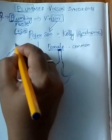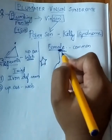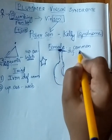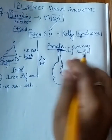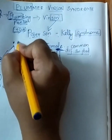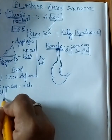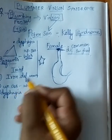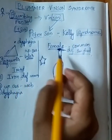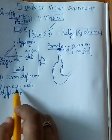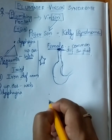The third symptom: since there is a web in the upper esophageal portion, there would be slight difficulty in swallowing food. The medical terminology for difficulty in swallowing food is dysphagia, so dysphagia is the third point. The classic triad of Plummer-Vinson syndrome is: first, iron deficiency anemia; second, upper esophageal web; third, dysphagia.